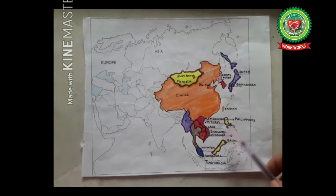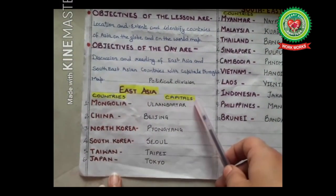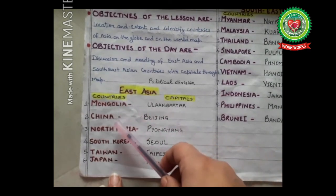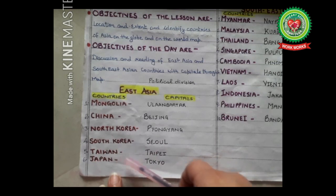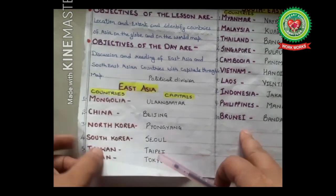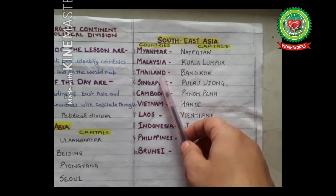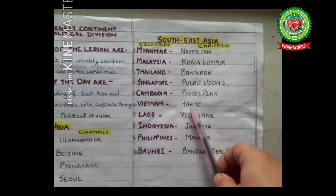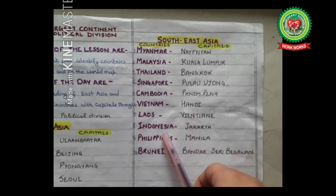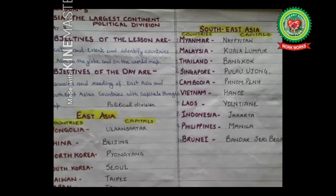Let's revise all the countries and capitals. East Asia: Mongolia — Ulaanbaatar; China — Beijing; North Korea — Pyongyang; South Korea — Seoul; Taiwan — Taipei; Japan — Tokyo. Southeast Asia: Myanmar — Naypyidaw; Malaysia — Kuala Lumpur; Thailand — Bangkok; Singapore — Phnom Penh; Cambodia — Phnom Penh; Vietnam — Hanoi; Laos — Vientiane; Indonesia — Jakarta; Philippines — Manila; Brunei — Bandar Seri Begawan. Students, revise all these and fill in your map. Have a good day!